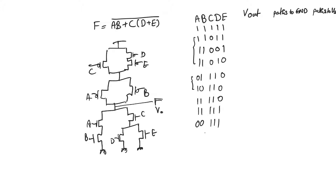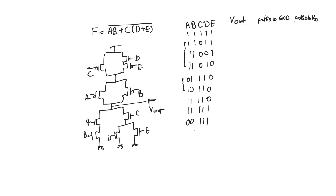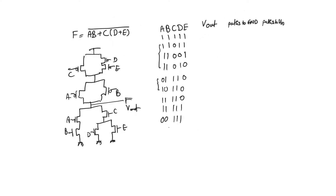You will get f at the output node, and the question is: what is V_out corresponding to this f for all the input values given in this table? The truth table for this function is going to be 32 rows long, so we will only look at select cases. For each case we want to find the value of V_out, the total current flowing through the circuit from supply to ground, and something called path to ground and path to VDD — the number of paths connecting the output node to ground and to supply.